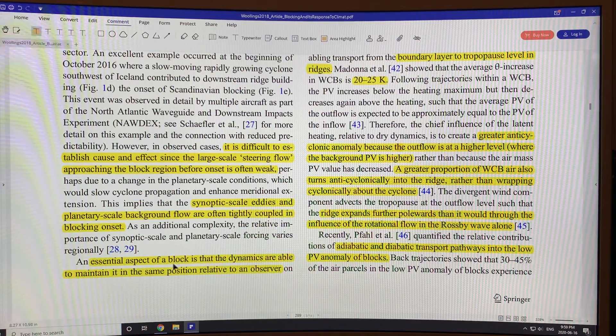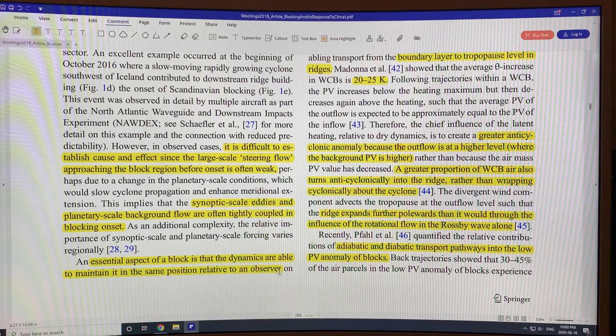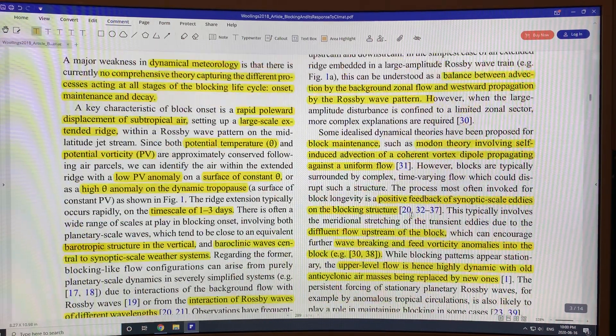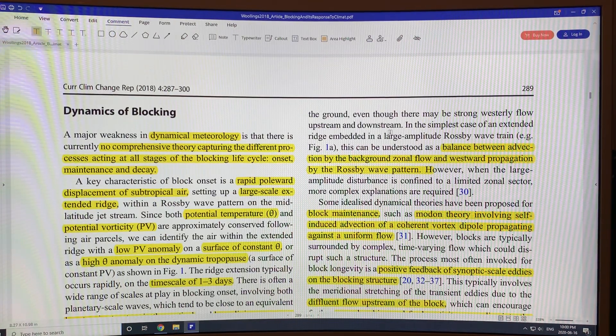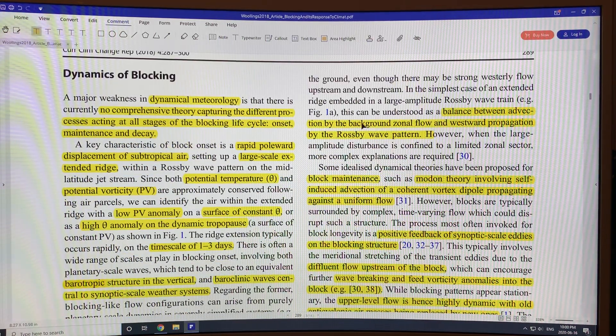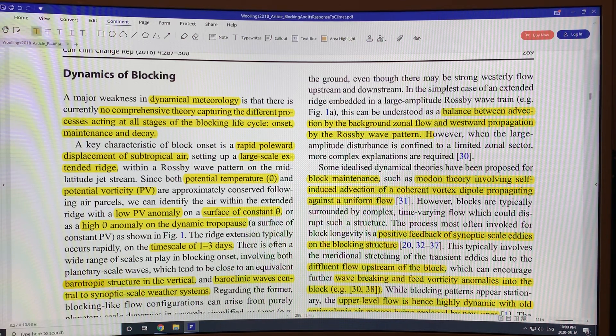An essential aspect of a block is that the dynamics are able to maintain it in the same position relative to an observer on the ground for long periods of time. I mean, these things can form and then last several weeks. There's a balance between the advection by the background zonal flow, so the air coming in, going up the ridge, coming out, and the Rossby wave pattern.